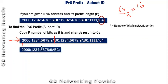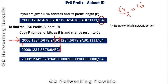Up to these 16 hexadecimal digits, we copy them exactly as they are. The remaining bits should be 0. So the network portion has been written as-is, and the host portion — also called the interface ID portion — has been converted to all zeros. This gives us the subnet ID from this IPv6 address.